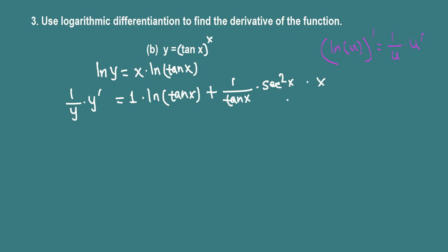We are done finding the derivative. To isolate y prime, derivative means dy over dx or y prime, we have 1 over y so we need to multiply throughout by y. Then y and y cancel so y prime equals y times this quantity.